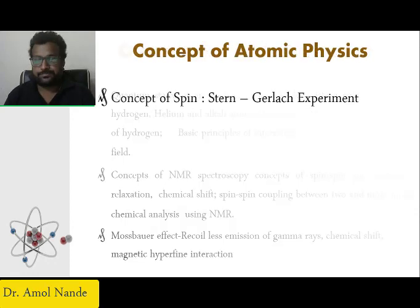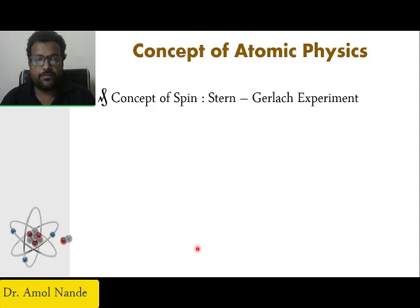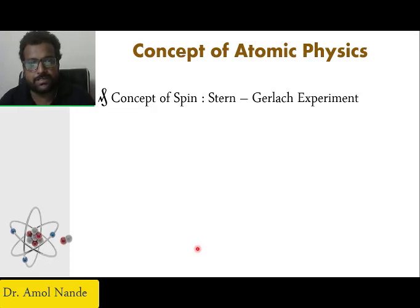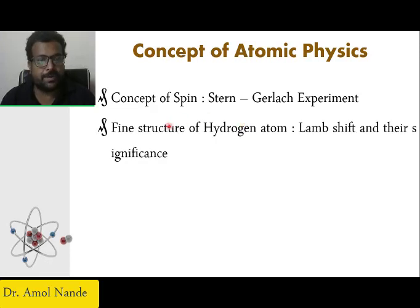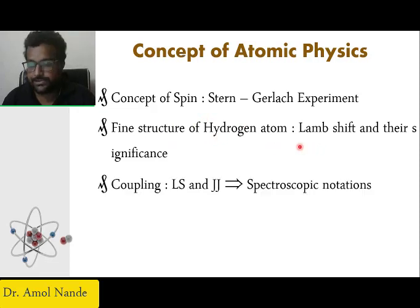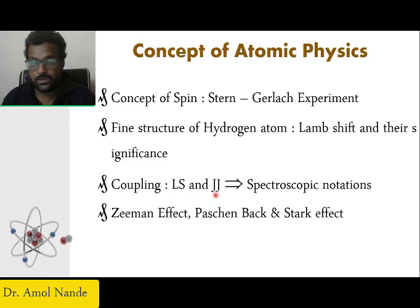We will start with the concept of spin. First we will see which concepts are basically used in atomic physics and which concepts deal with molecular physics or molecular spectroscopy. In atomic physics we will see the concept of spin and the Stern-Gerlach experiment, hyperfine structure of the hydrogen atom, Lamb shift and their significance, and coupling like JJ coupling or LS coupling.